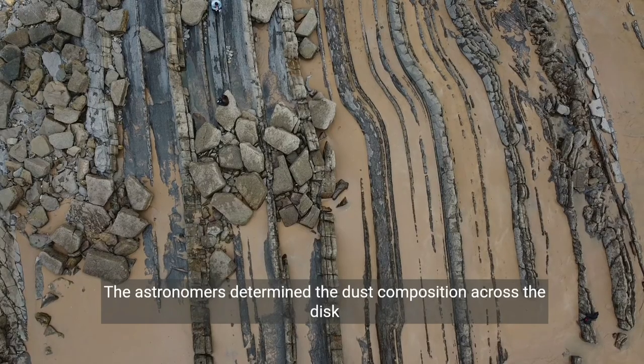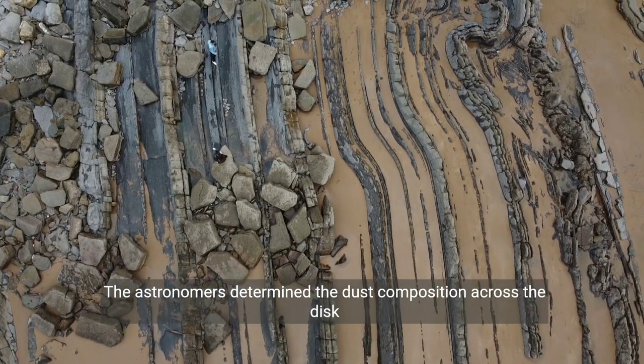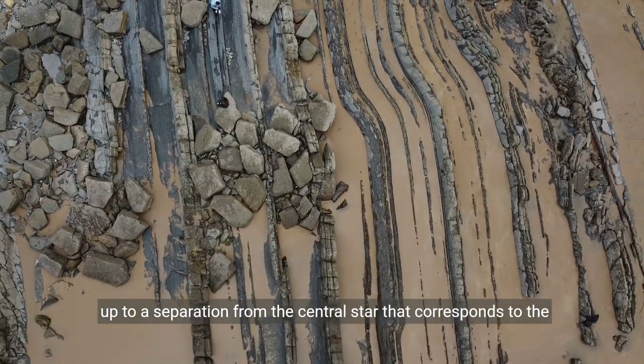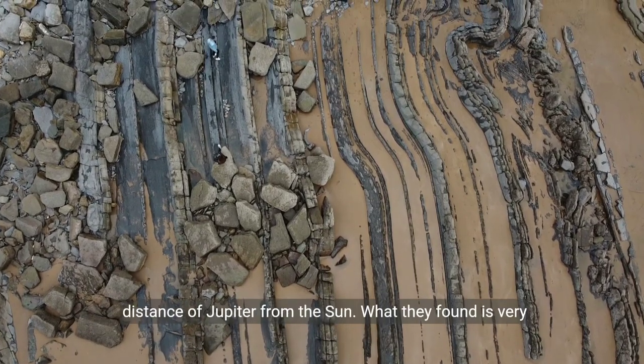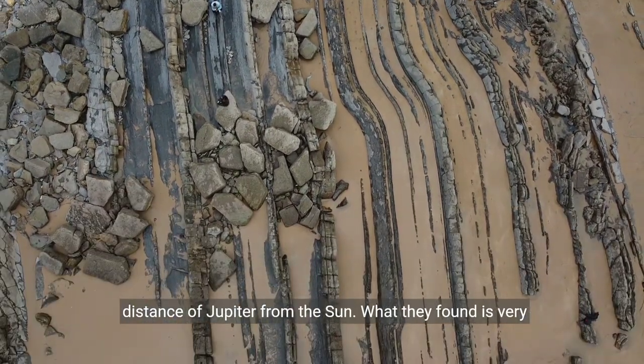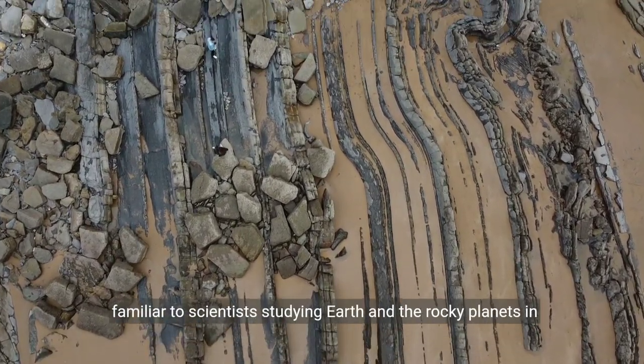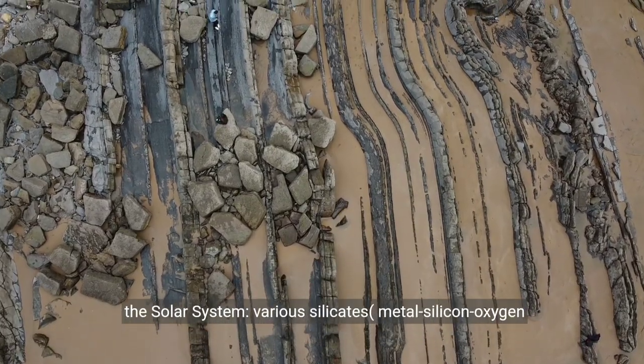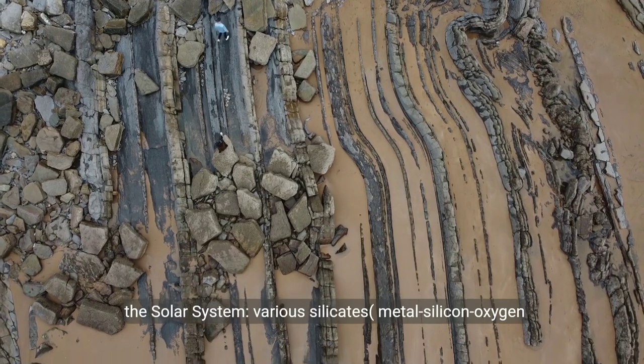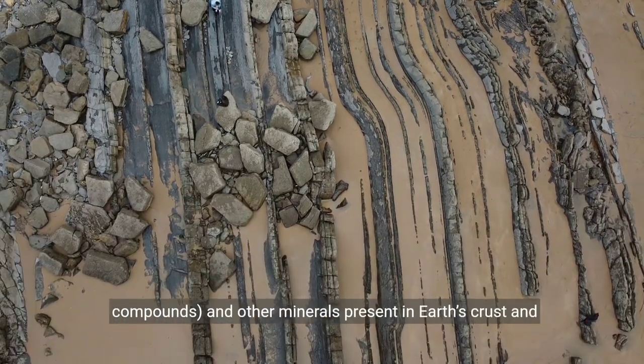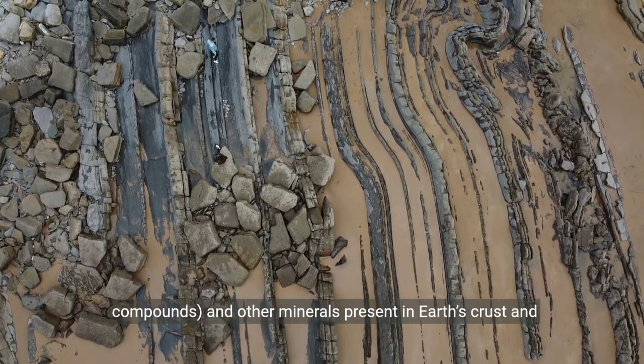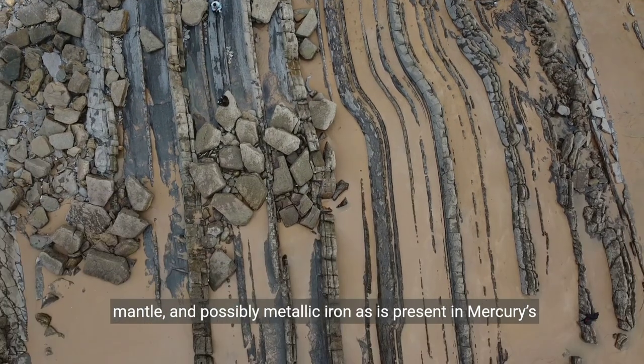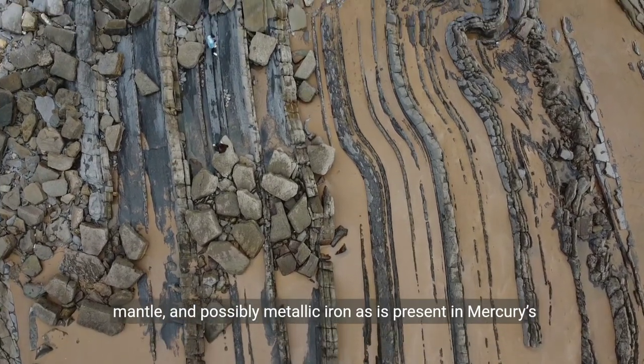The astronomers determined the dust composition across the disk up to a separation from the central star that corresponds to the distance of Jupiter from the Sun. What they found is very familiar to scientists studying Earth and the rocky planets in the solar system. Various silicates, metal-silicon oxygen compounds, and other minerals present in Earth's crust and mantle, and possibly metallic iron as is present in Mercury's and Earth's cores.